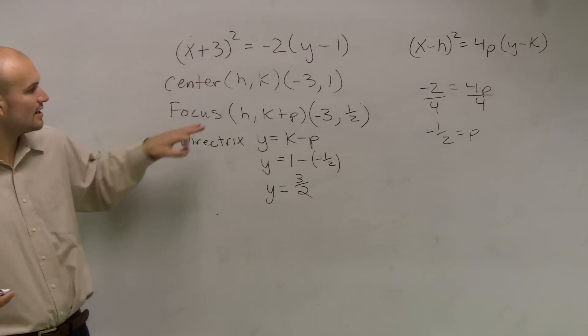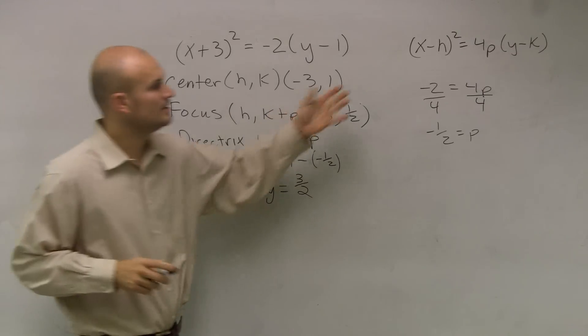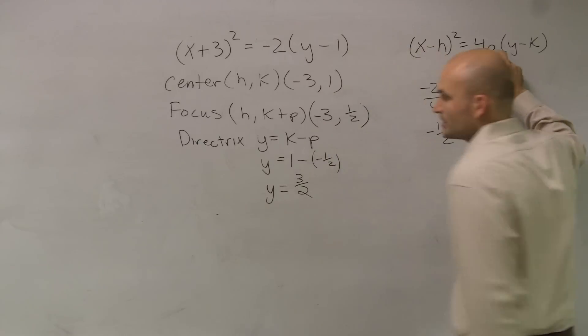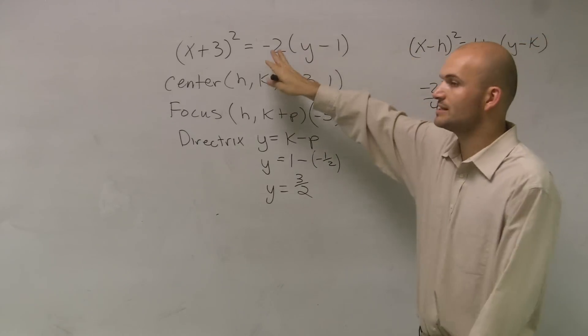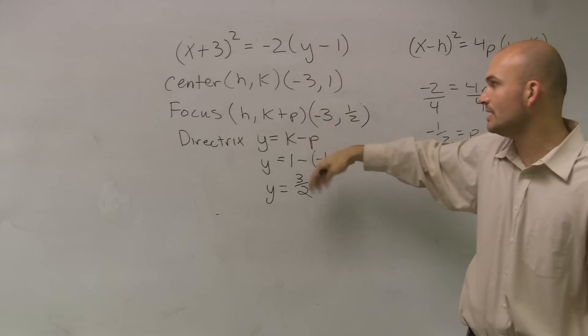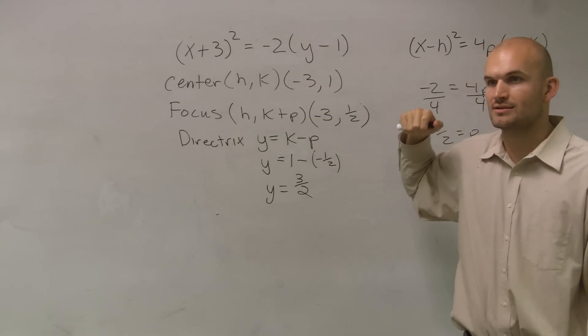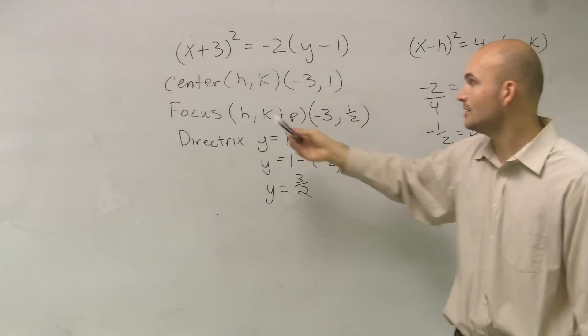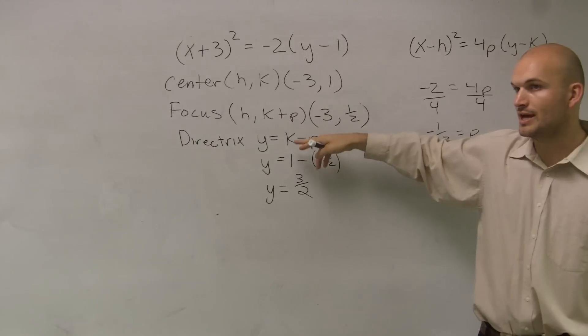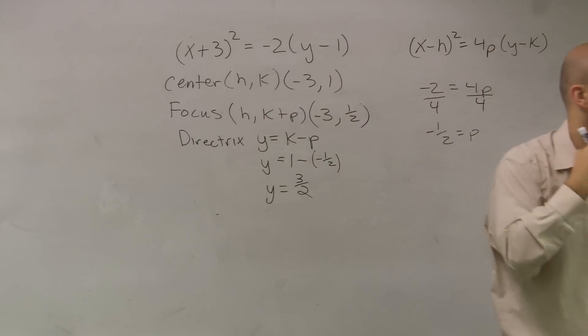And that's it. Now we found our center, our focus, and our directrix. Does that make sense? At least find the p. The hard part about this is figure out what that p is. Just make sure you get it into that same format, and then you can say, oh, 4p equals negative 2. Once you've found the p, the focus you add the p, the directrix you subtract. And it just depends, is it vertical or horizontal? When you have it vertical, you're adding and subtracting to your k. If it was horizontal like the last problem, you add and subtract to the h. That's it.